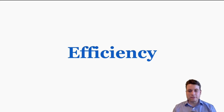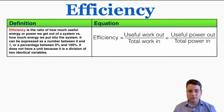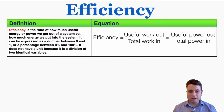The idea of efficiency in physics is similar to how we use it in everyday lives. The definition of efficiency is the ratio of how much useful energy or power we get out of a system versus how much energy we put into the system. It can be expressed as a number between 0 and 1, or a percentage between 0% and 100%. It does not have a unit because it is a division of two identical variables — two types of work, energy, or power.